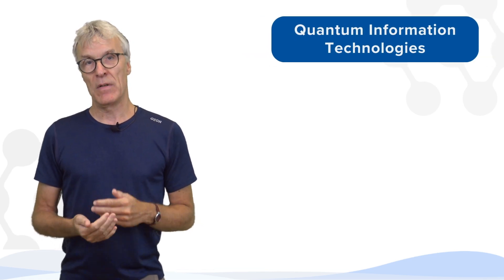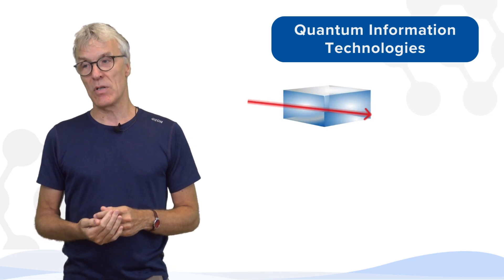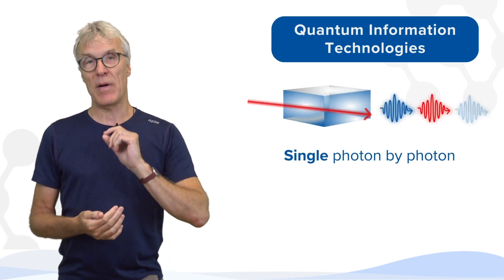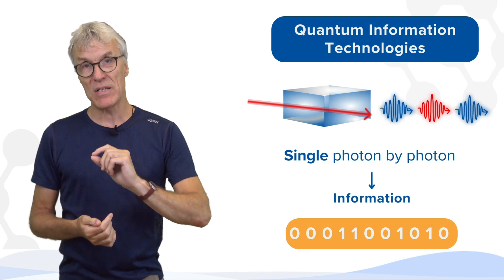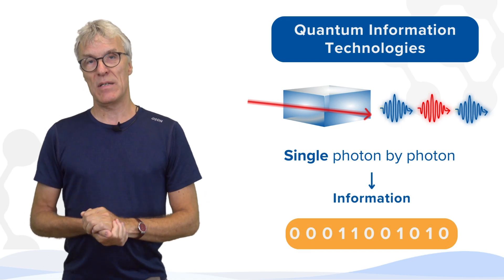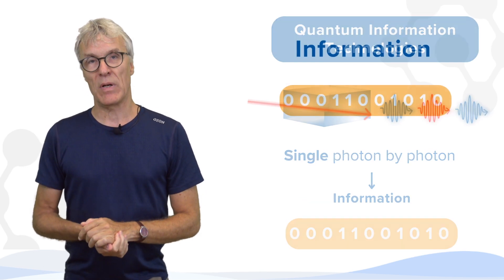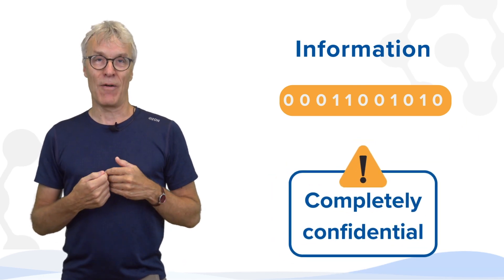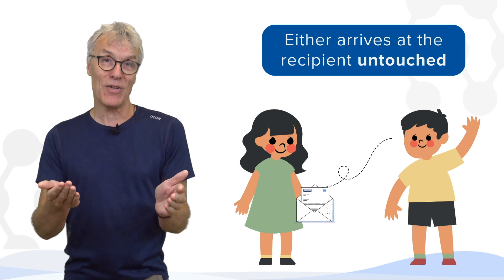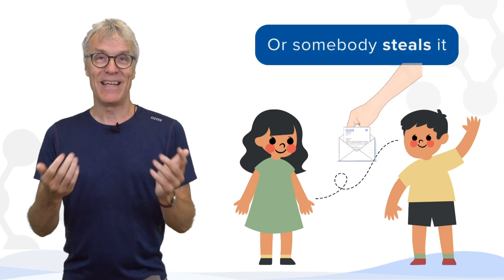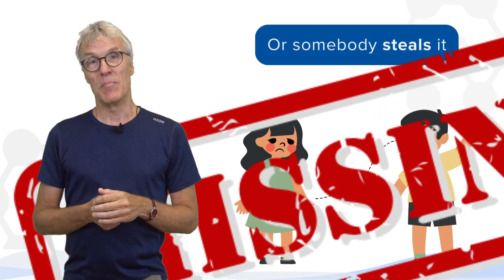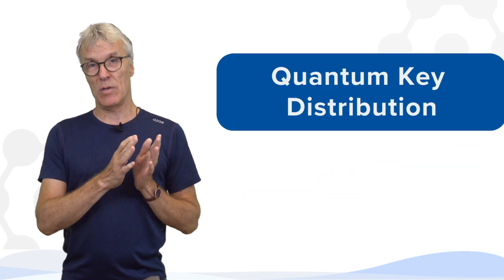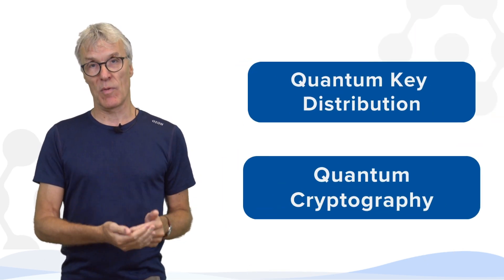We are talking about using these light sources to send single photon by photon information. This information is sent not at very high data rates, but it can be made completely confidential because you cannot break the photon. So either it arrives to the recipient untouched or somebody steals it, but then you will notice that it has gone missing. So this is quantum key distribution or quantum cryptography.